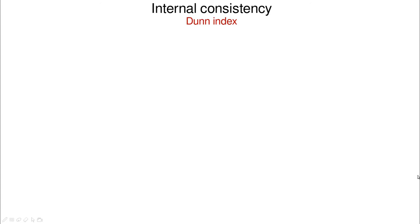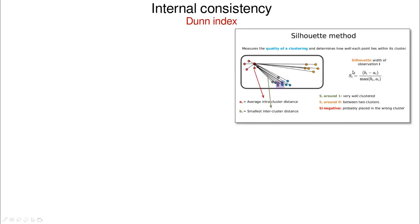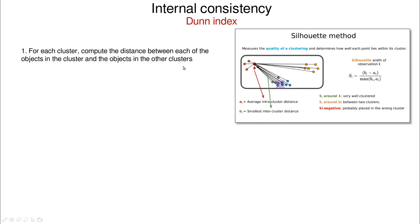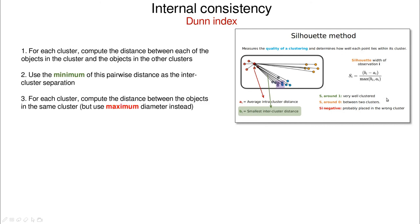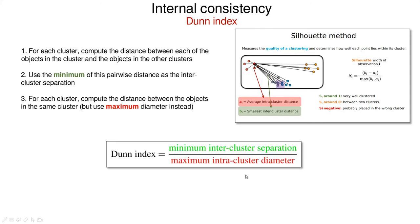The Dunn index is similar to the silhouette width. We compare distances of each point in a cluster to any other point, defining the minimum pairwise comparison. The green part of the equation is the minimum distance from each point of one cluster to any point of another cluster. Instead of taking the average as in the silhouette method, we take the maximum distance — the diameter of each cluster. The Dunn index is then the ratio between the minimum inter-cluster separation and the maximum intra-cluster diameter.